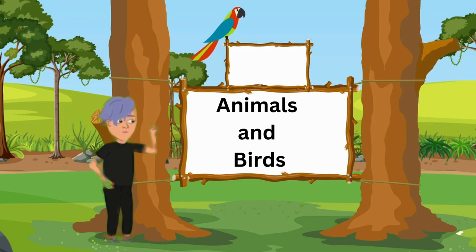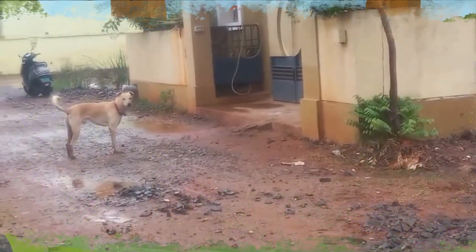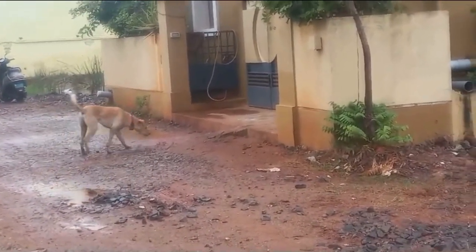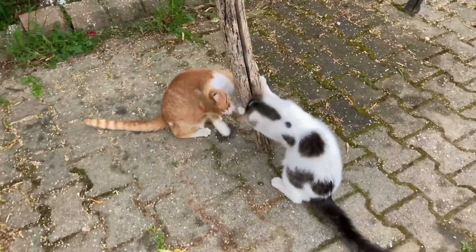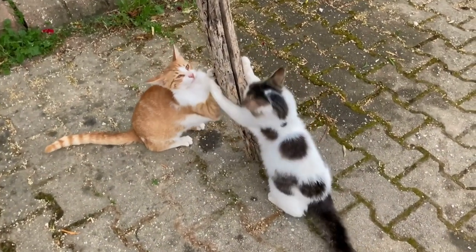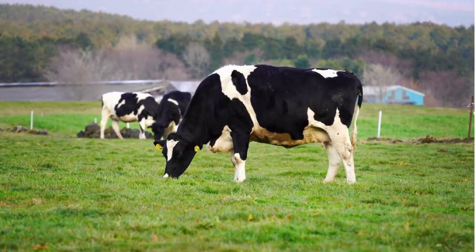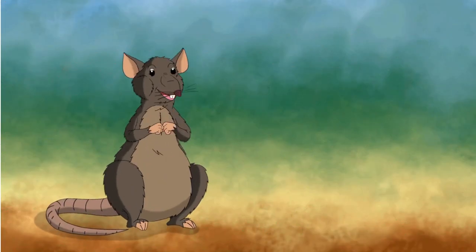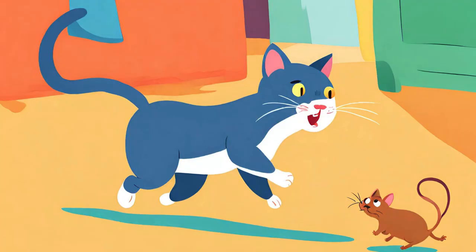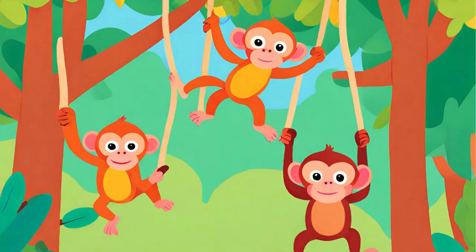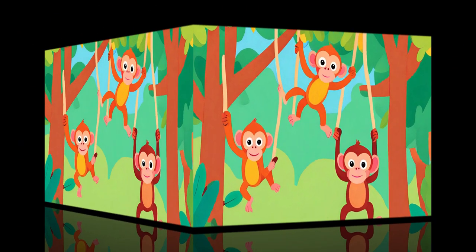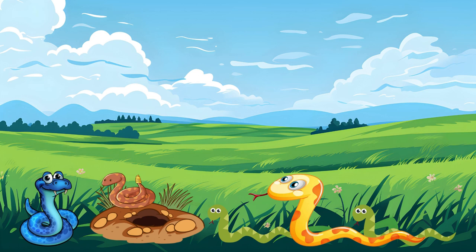Come, let us learn about the animals and birds that live near my house. This is a dog. It lives near the gate. These are cats. They jump up and down in the veranda of my house. This is a cow. It eats grass. This is a rat. The rat is very small. The cat chases the rat. These are monkeys. They swing and jump in the trees. There is a field beside my house. There are a few snakes in it. You have to walk carefully in the field.